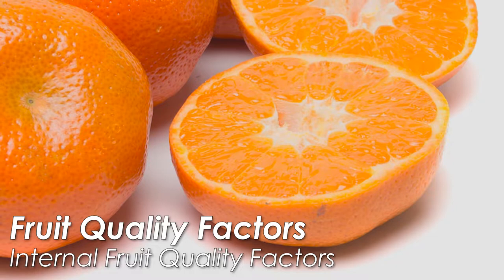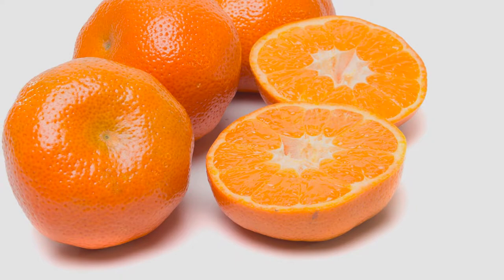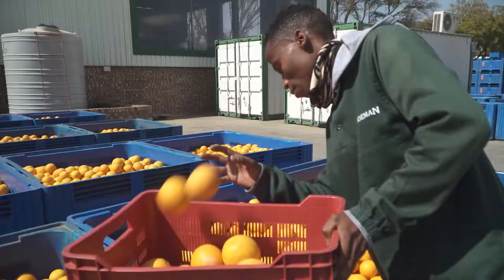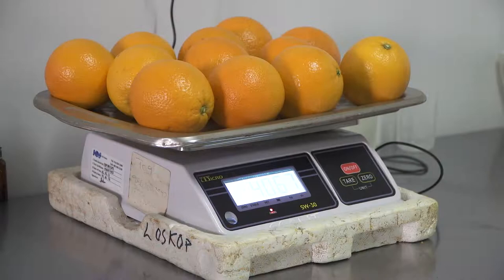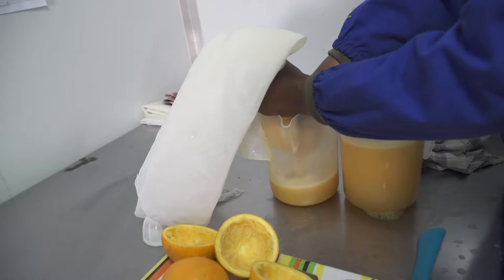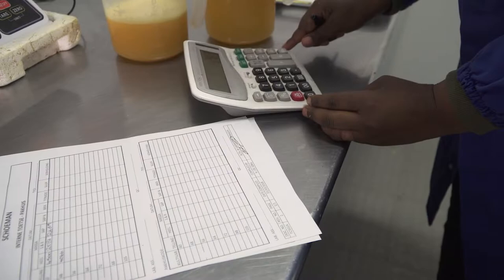Internal fruit quality factors determine the taste and eating quality of the fruit. There is a separate measurement for each internal fruit quality factor. Juice content is measured by selecting a sample of fruit, weighing the fruit, extracting all the juice, separating the juice from the pulp and weighing the fruit rinds and pulp. The juice percentage is then calculated based on these two weight measurements.